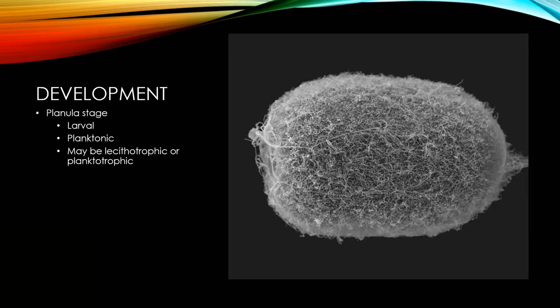During development, cnidarians pass through a planula stage. The planula larvae can be planktonic, either lecithotrophic — meaning the larva's only source of sustenance comes from its own yolk — or planktotrophic, meaning larvae feed on phyto- or zooplankton for sustenance.